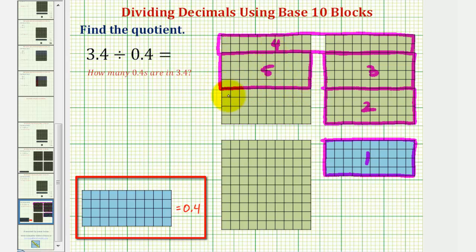A sixth copy, a seventh copy, and finally an eighth copy of four longs or 0.4 in 3.4.